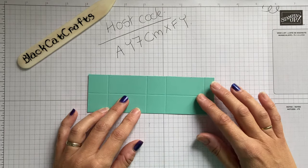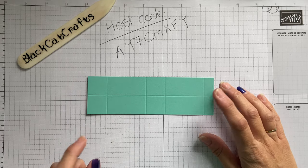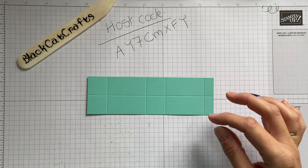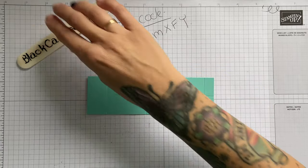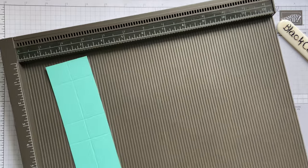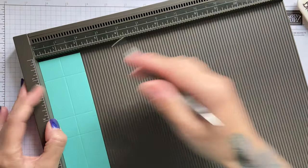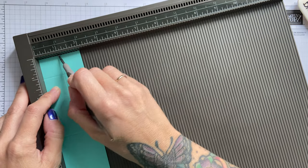You're going to need a piece of Coastal Cabana cardstock. This measures 6½ by 2. And then we're going to do a little bit of scoring. With your scoreboard, on the 2 inch side, you want to score at 1.